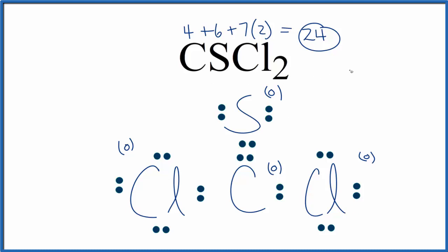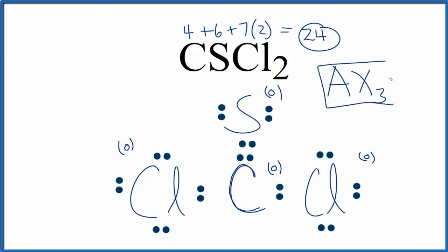If we look at the molecular geometry, we can use the AXE notation. A is the central atom — that's the carbon. X is the number of atoms bonded — we have 3 atoms bonded. E is the number of lone pairs on the central carbon, and there are no lone pairs. So we have AX3, and the molecular geometry for CSCl2 is trigonal planar.